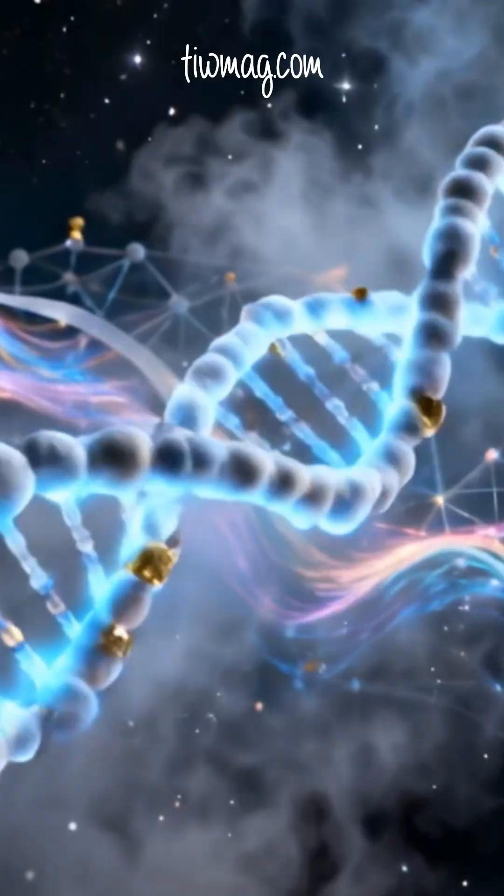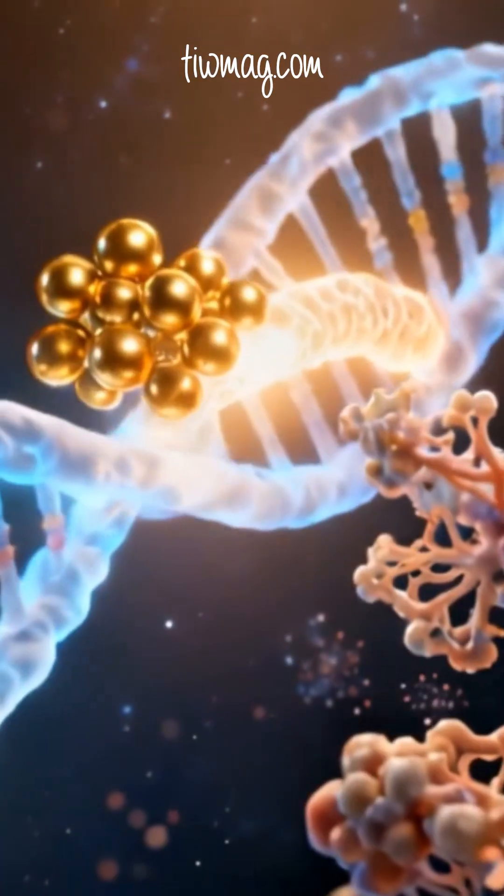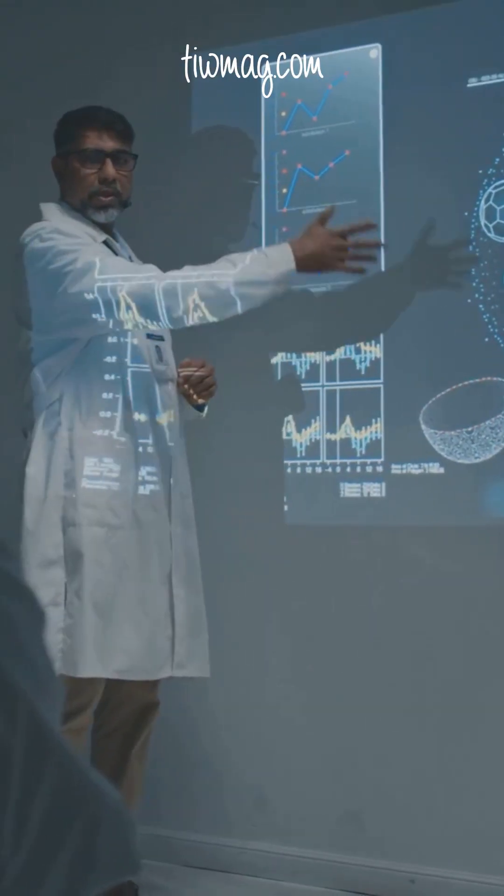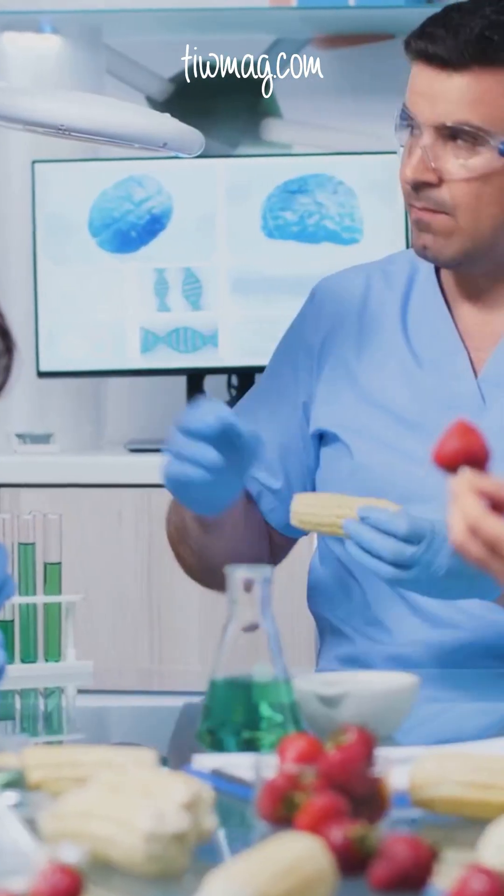Picture a hyper-real double helix, like a glass staircase. Each step a gene. With tools like CRISPR, we could swap a cracked step—say the mutation behind cystic fibrosis or sickle cell anemia—for a solid one.